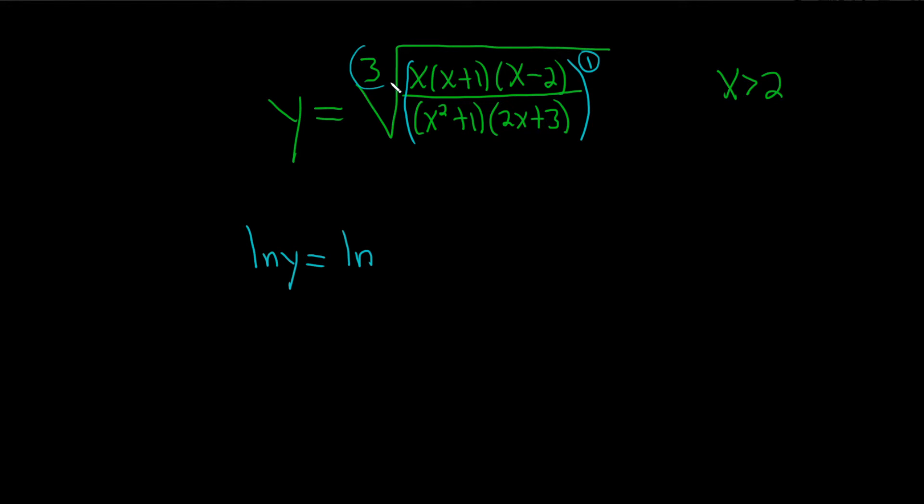It's 1 over 3. So let's do that. This is parentheses x, parentheses x plus 1, and then x minus 2, all divided by x squared plus 1, and then 2x plus 3. And this is all to the 1 third.